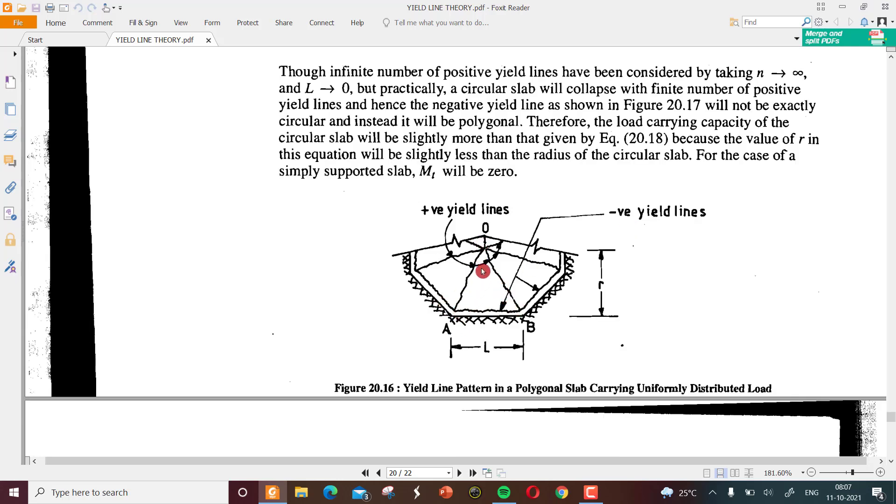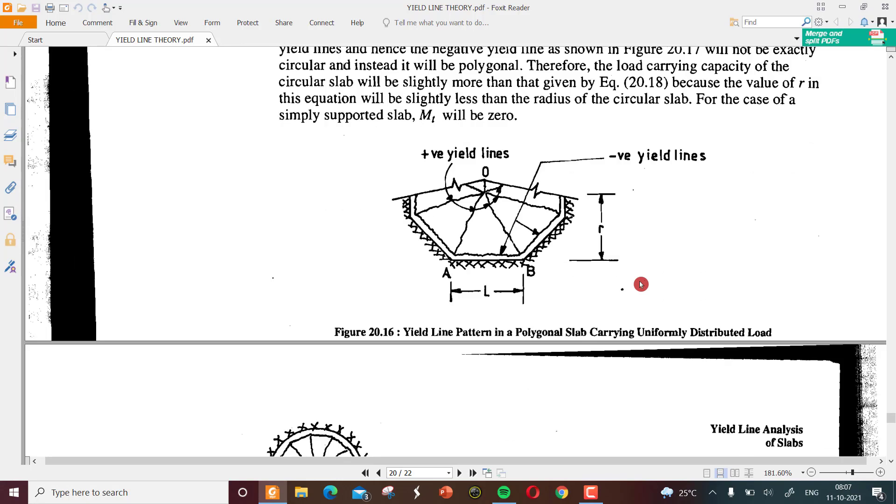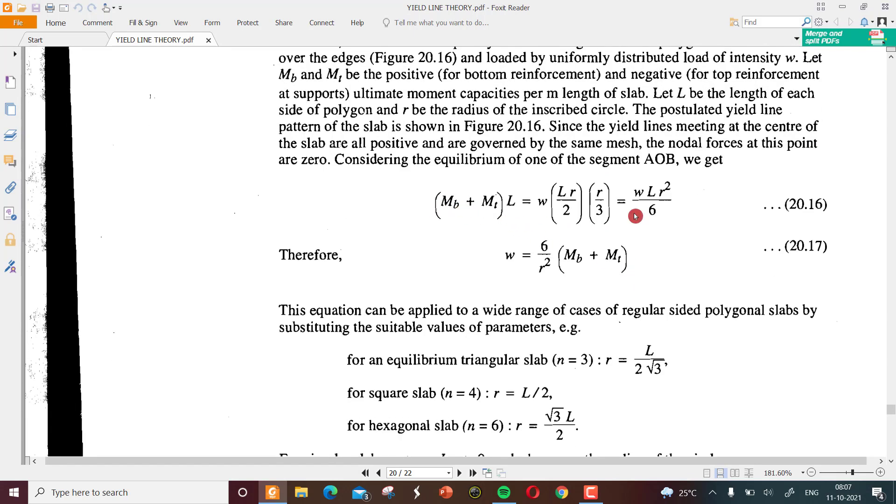For this one, the equilibrium: M_b plus M_t total moment times l is equal to w times l times r by 2 times r by 3, which equals w l times r squared by 6. By considering the equilibrium, we got this equation. After simplifying, we will get w equals 6 by r squared times M_b plus M_t. This is the equation which is available to us.